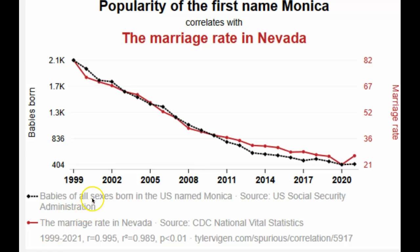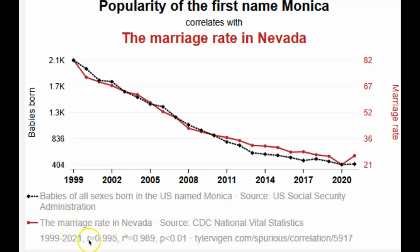Here's an example of a correlation: we see the popularity of the first name Monica correlating with the marriage rate in Nevada. You see here these two lines — they are very closely tied together. When we calculate a correlation, the R is 0.995, so it's a positive 0.995. And the R squared is 0.995 times 0.995, which is 0.989.